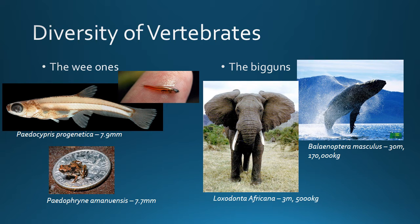There's incredible diversity among vertebrates. First, just in size: some fish and frogs are less than a centimeter in length, whereas the blue whale can be 30 meters and 170,000 kilograms. The African elephant is also huge, up to 5,000 kilograms.